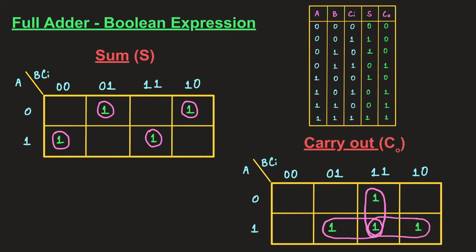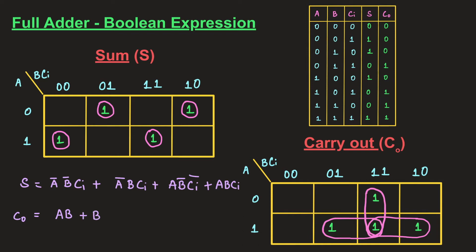After grouping on the K-map, the sum expression is: S = ā·b̄·ci + ā·b·c̄i + a·b̄·c̄i + a·b·ci. For the carry out (C₀), after grouping we get three terms: a·b + b·ci, and the last term a·ci. This can be rewritten as C₀ = a·b + ci·(a + b).